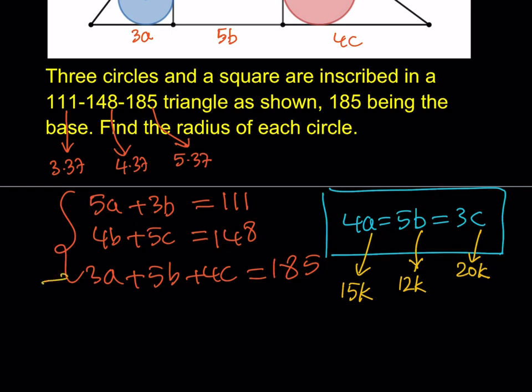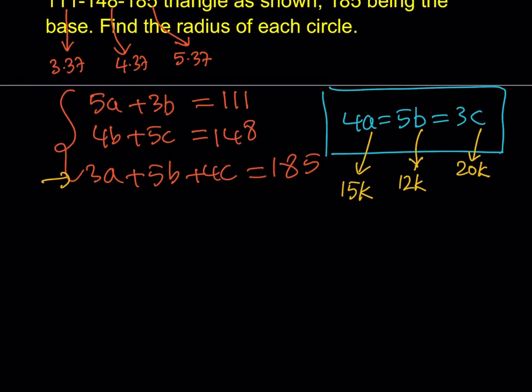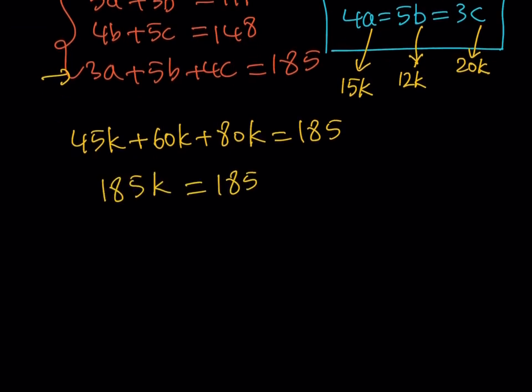So 3a, since a is 15k, it's going to be 45k. Be careful here. 5b, b is 12k, 5b is going to be 60k, and c is 20k, 4c would be 80k. And they all add up to 185. You're going to realize why I picked these large numbers, because the answers are going to be nicer that way. When you add these up, you're going to get 185k equals 185. And then from here, we get k equals 1. This is why I picked these numbers. Hopefully that's more clear now.